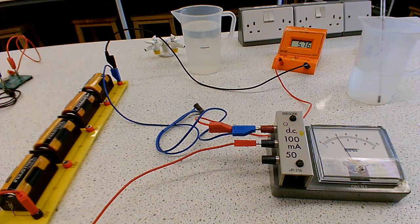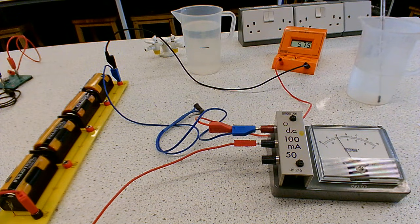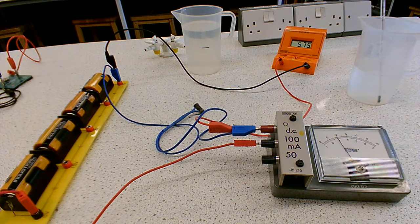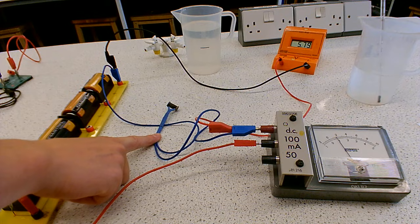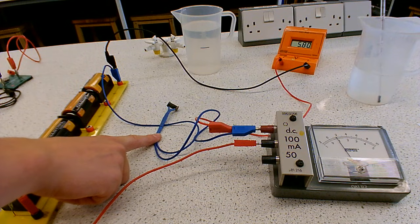Okay, so in this video we're going to look at a component that we can change the resistance of. This component is called a thermistor, so we can change its resistance by changing its temperature.